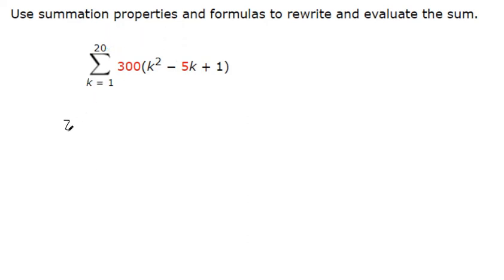So it's 300, you can factor out that 300 from everything, and it's a summation from k equals 1 to 20 of k squared minus 5 times the summation of k equals 1 to 20, just saving myself some writing there, and then plus the summation from k equals 1 to 20 of 1.